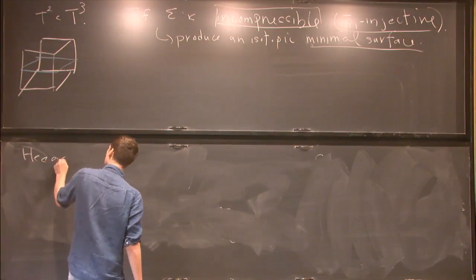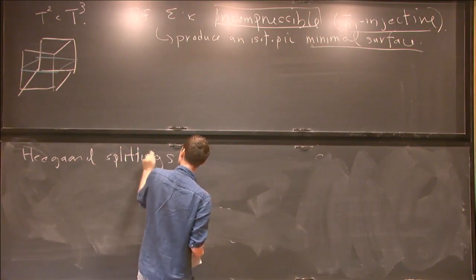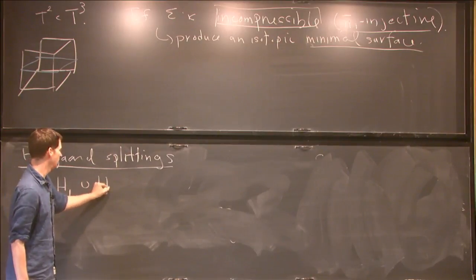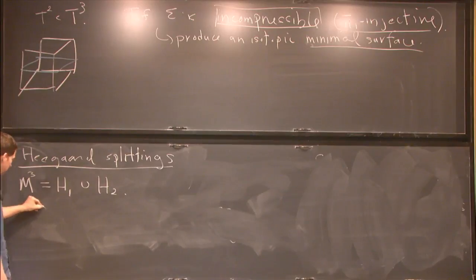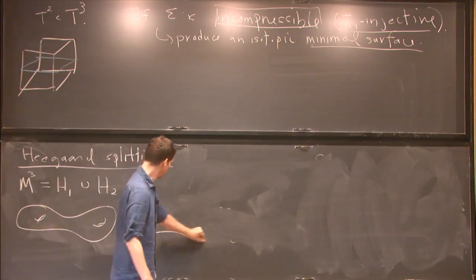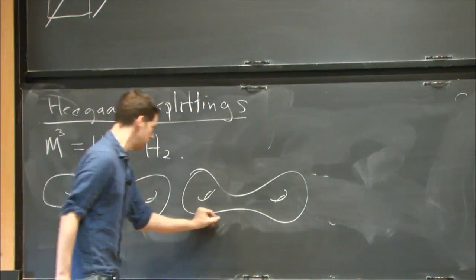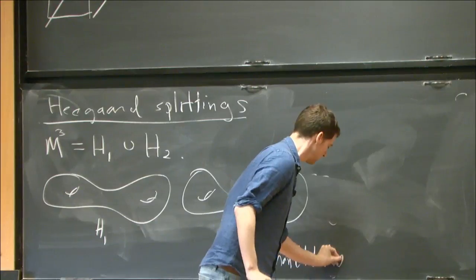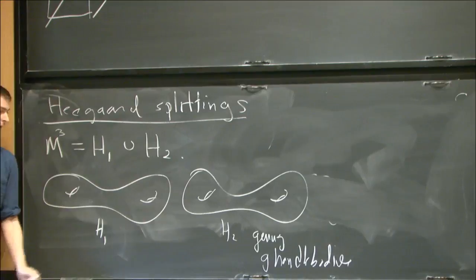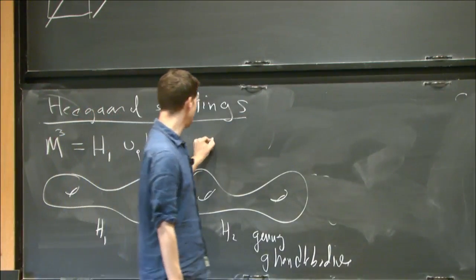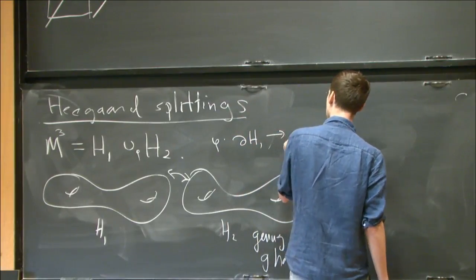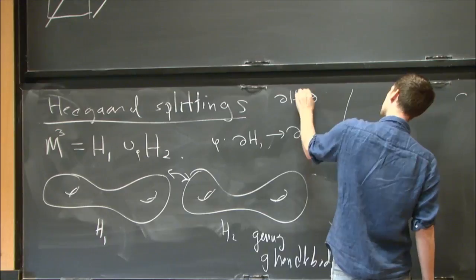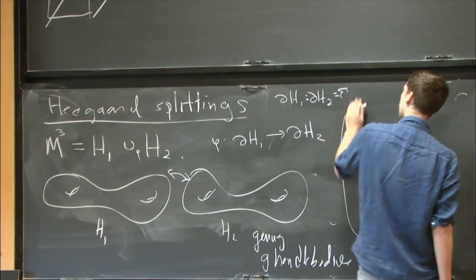What I'm going to be dealing with for the rest of this talk are Heegaard splittings. That means I take my three-manifold and write it as a union of two handle bodies — H₁ and H₂ — which are genus-g handle bodies. Each is a manifold with boundary, and there's a gluing map between the boundaries, an identification of the boundary of the first handle body with the boundary of the second.